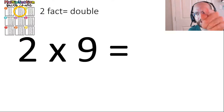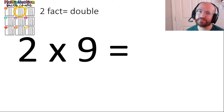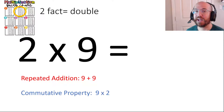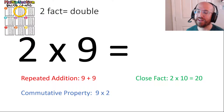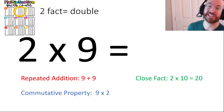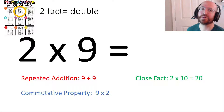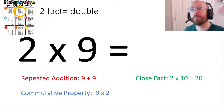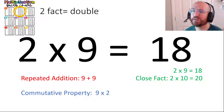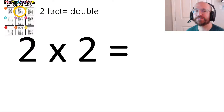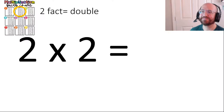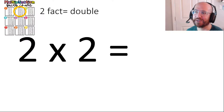Do you know two times nine? That's like nine plus nine. And if you don't know that, I bet you know two times ten, because ten plus ten is twenty. So we could go back a group of two - instead of twenty, subtract two to get eighteen.